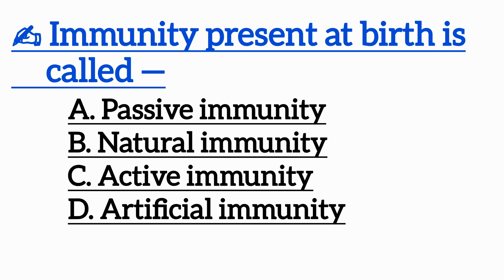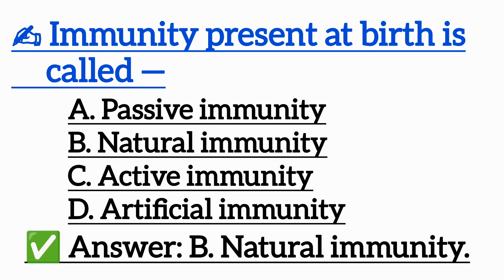Question 4: Immunity present at birth is called — Option A: Passive immunity, Option B: Natural immunity, Option C: Active immunity, Option D: Artificial immunity. Correct answer is Option B: Natural immunity.